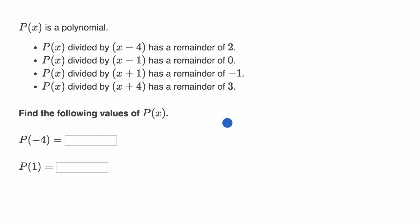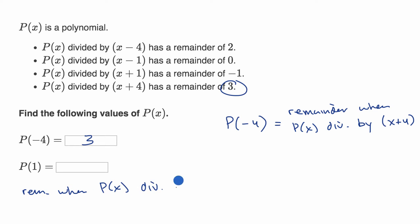P of negative four is going to be equal to the remainder when P(x) is divided by what? You might be tempted to say x minus four, but they're trying to trick you intentionally. This would be the remainder when P(x) is divided by x plus four. They tell us P(x) divided by x plus four has a remainder of three. Similarly, P of one is the remainder when P(x) is divided by x minus one. The remainder is zero.